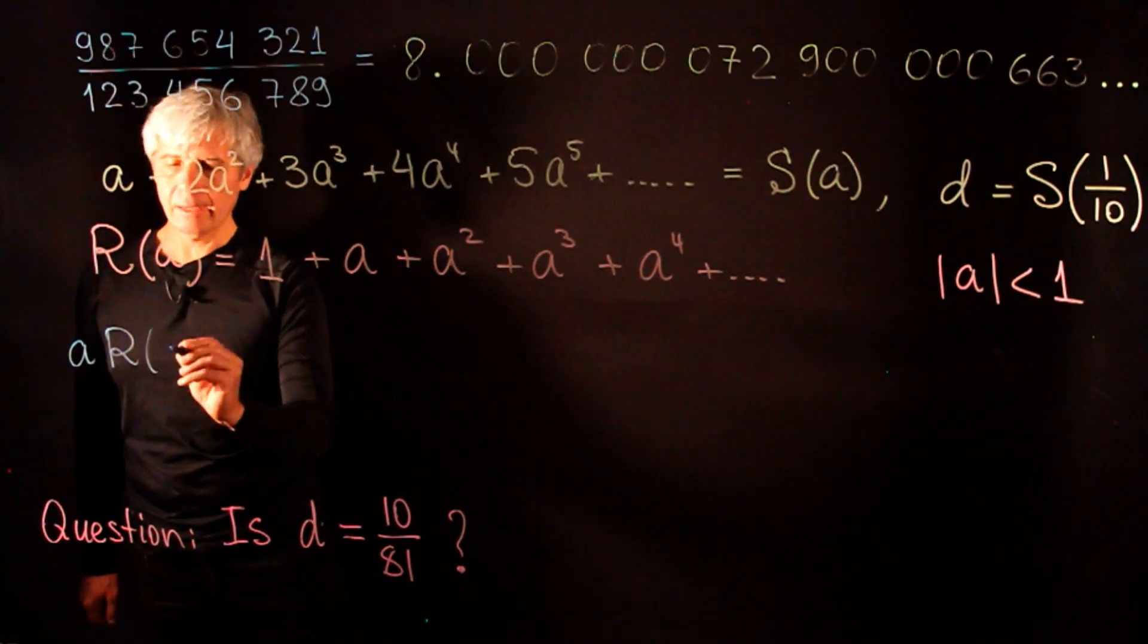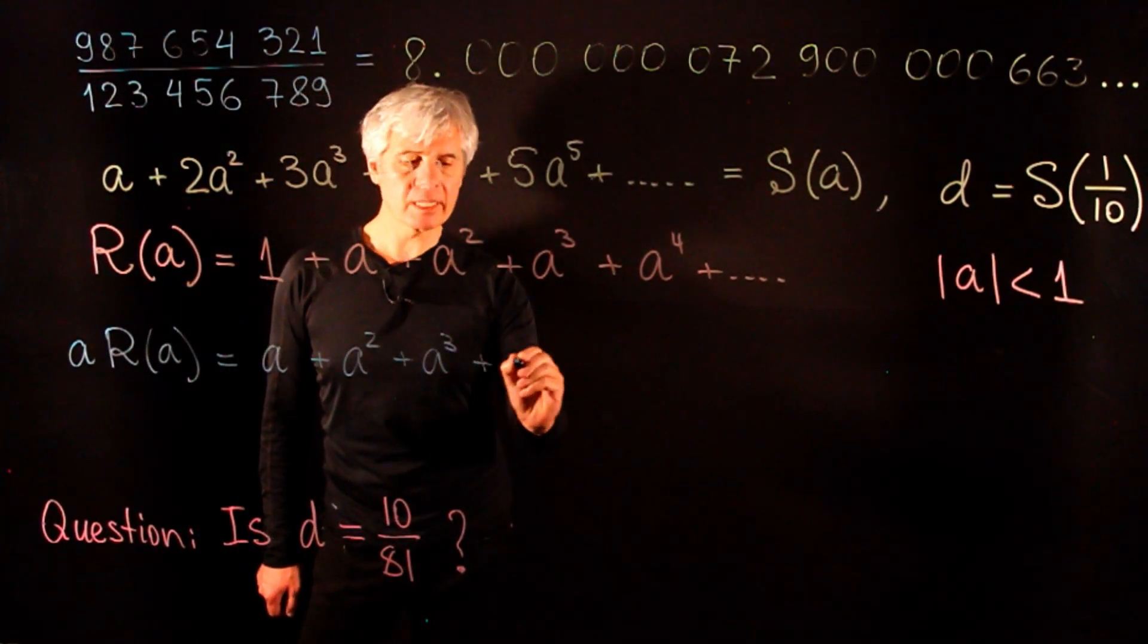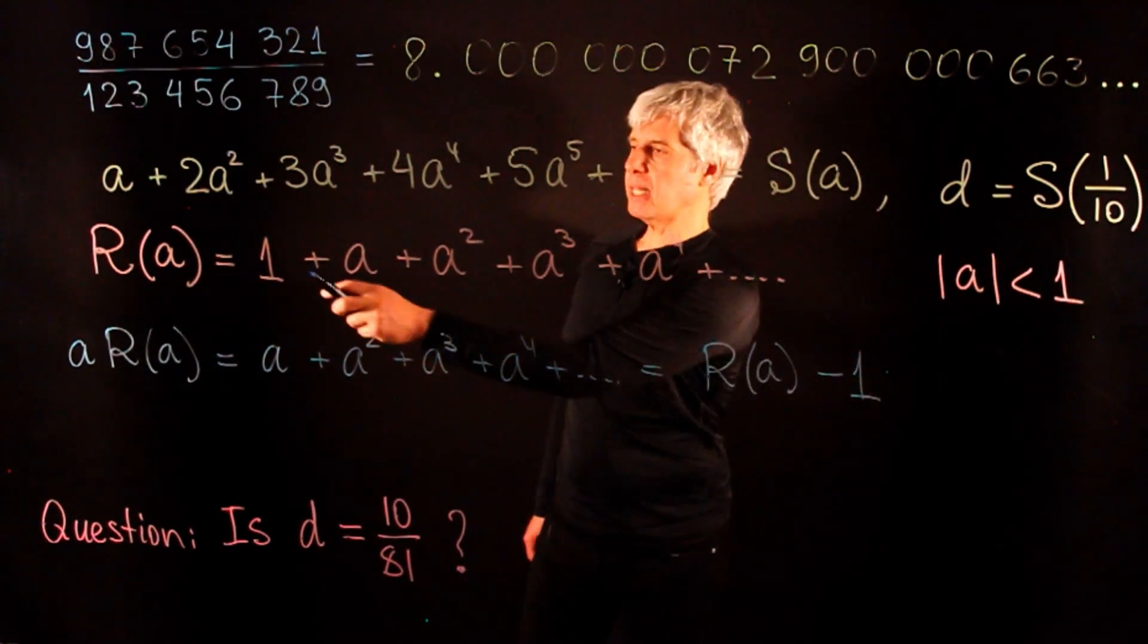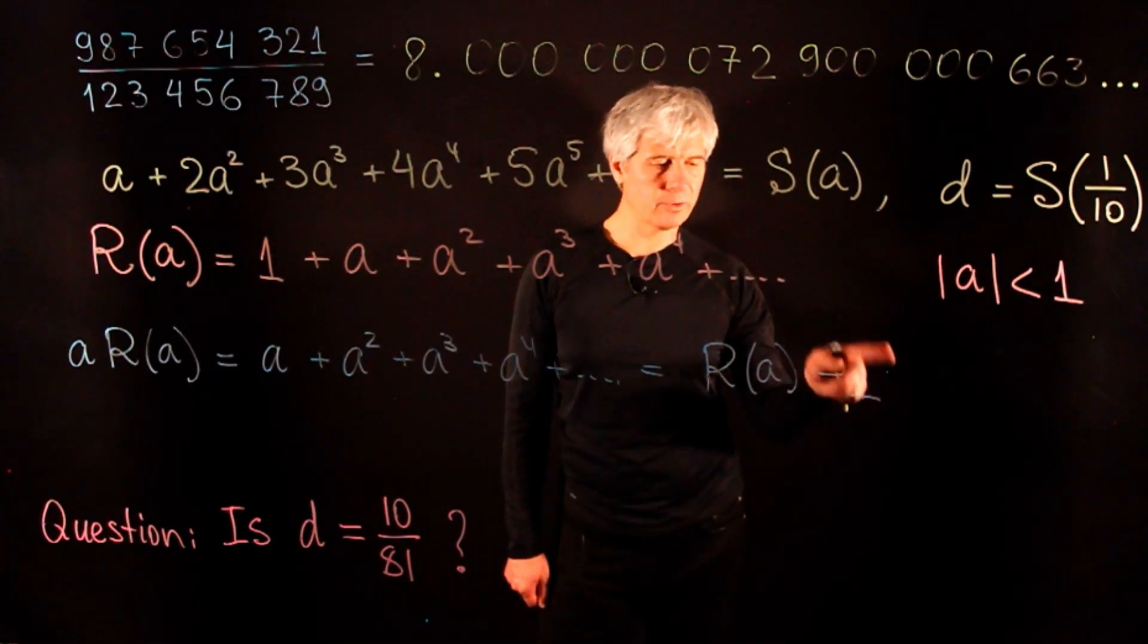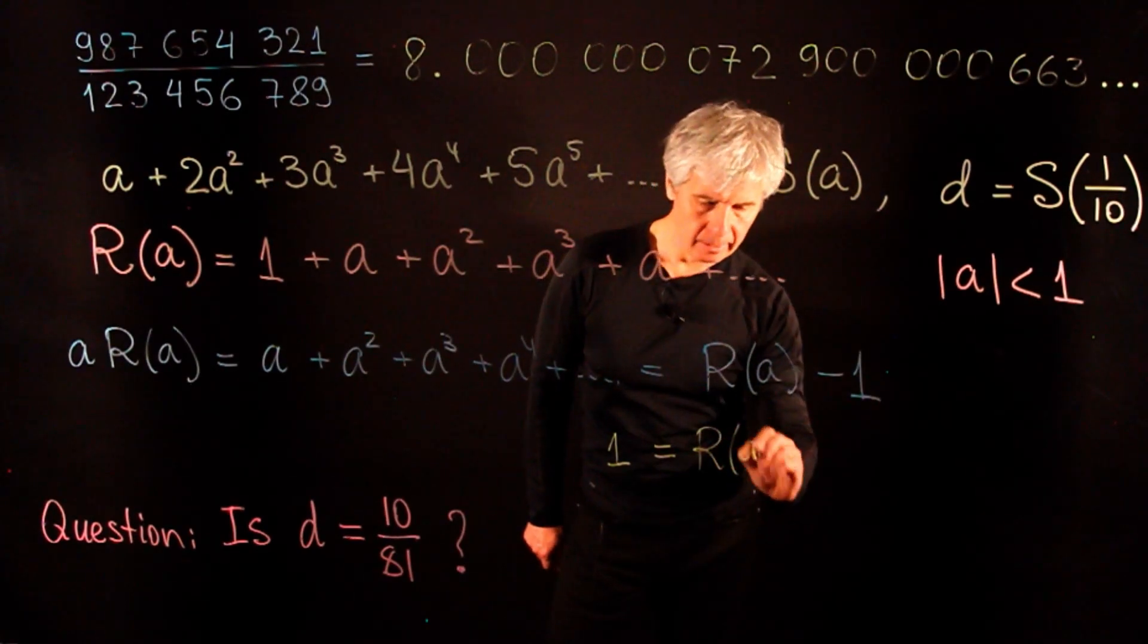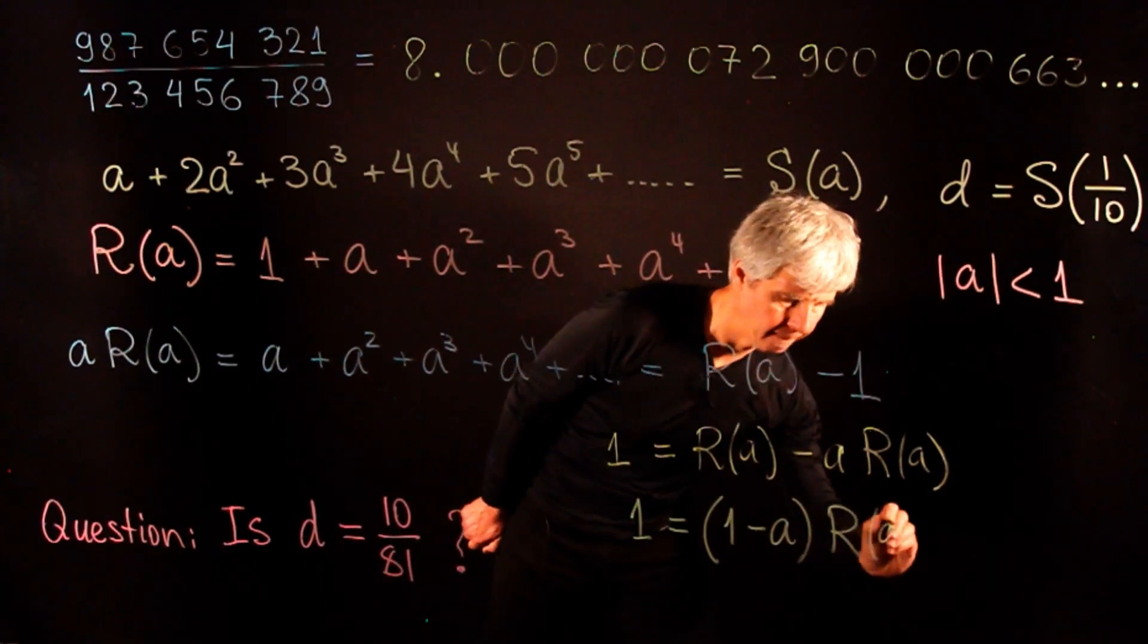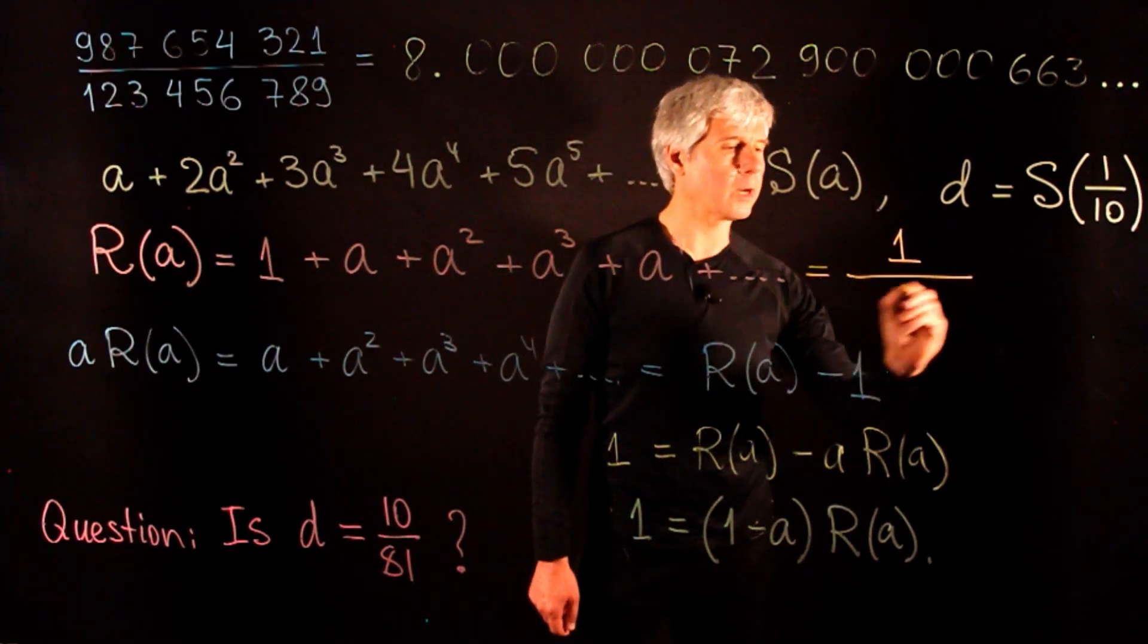Let us play with this expression. If we multiply both sides by a, then we will get that a plus a squared plus a cubed plus a to the power of 4 and so on. But the right hand side is exactly r of a minus 1. Because when we multiplied r of a by a, the constant term simply disappeared. Now let us apply some algebra. Let's move minus 1 to the other side and then we will get that 1 is equal to r of a minus a times r of a. Or this is equivalent to saying that 1 is equal to 1 minus a times r of a. This tells us that the infinite sum r of a is equal to 1 over 1 minus a.